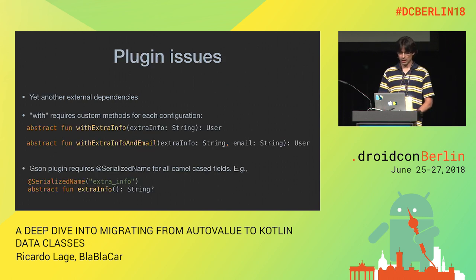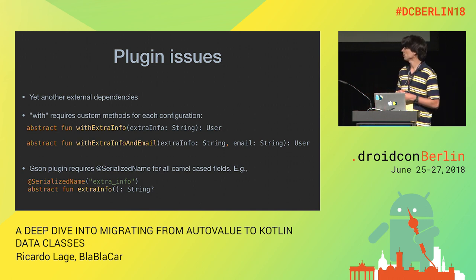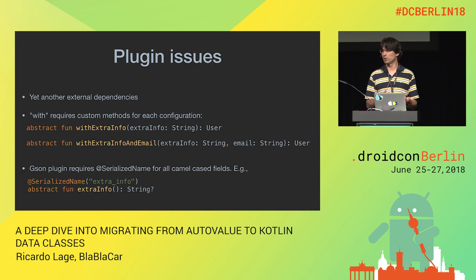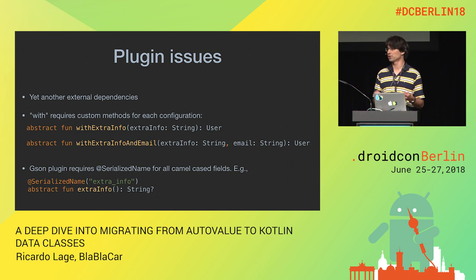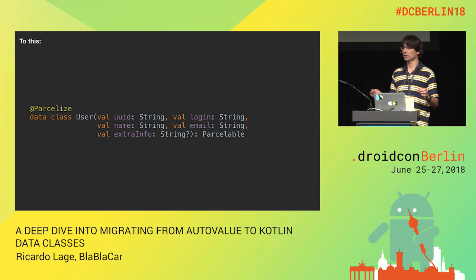Comparing the two: with data classes we have less external dependencies, much simpler and smaller code — just one line instead of an abstract class. No annotation processing step, since this is done by Kotlin at compile time. The AutoValue plugins also had issues: they are third-party dependencies not maintained by Google, 'with' methods multiply with each transformation, and GSON's field name policy can't be used — you must annotate all camelCase fields with their snake_case versions.